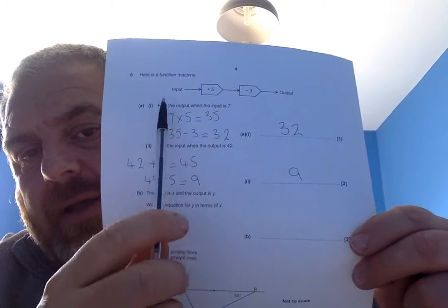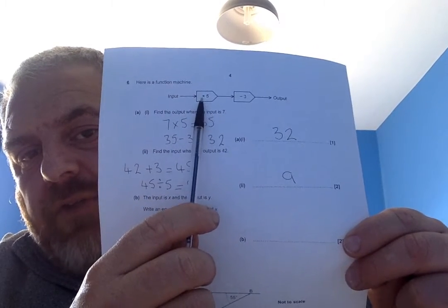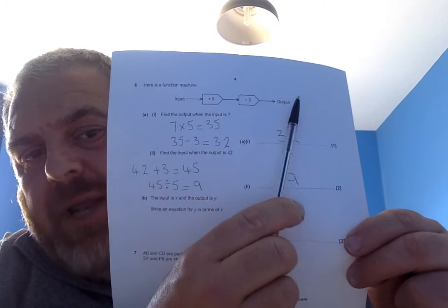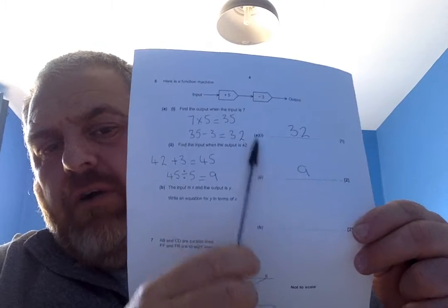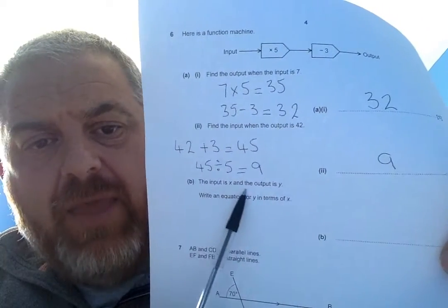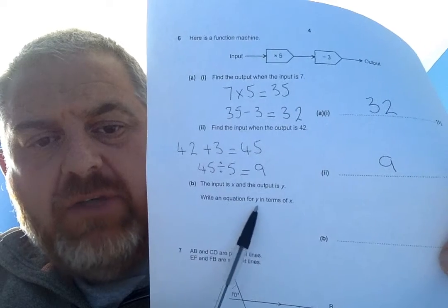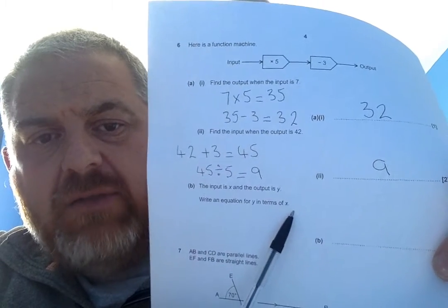And if I work that back, 9 times 5 is 45 minus 3 gives me an output of 42. So, I'm really confident that these values are correct. The next stage says the input is x and the output is y. Write an equation for y in terms of x.